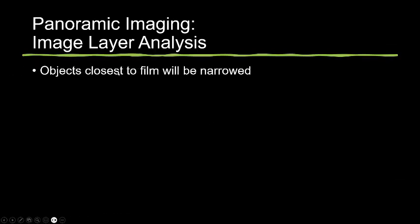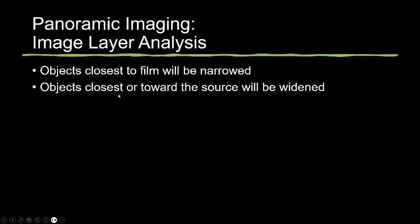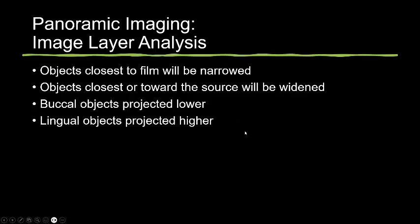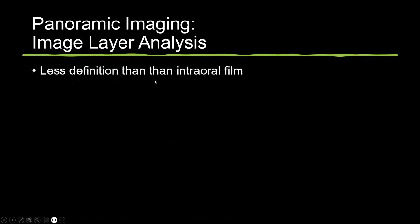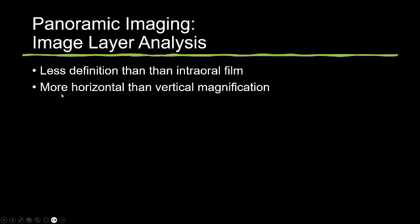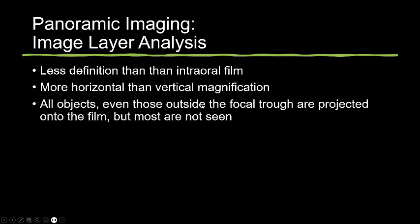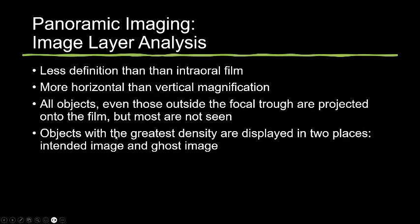Image layer analysis: objects closest to the film will appear narrowed; objects closest to the source will be widened. Buccal objects are projected lower, while lingual objects are projected higher. Objects in the center of the layer are magnified approximately 20 to 30%. There is less definition than on intraoral film, and definitely more horizontal than vertical magnification. All objects, even those outside the focal trough, are projected onto the film, but most are not visible. Objects with the greatest density are displaced in two places — the intended image and a ghost image.